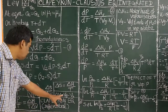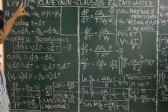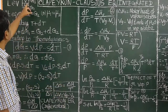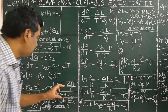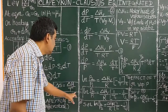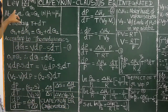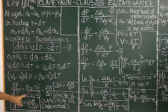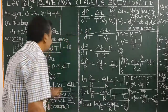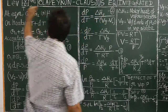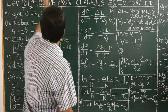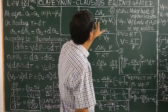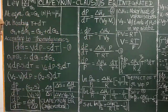Here, ΔV is the molar volume of water in the vapor state minus the molar volume of water in the liquid state. This equation rewritten as dP/dT = ΔHv / (T·(Vg − Vl)) is derived for vaporization of water. Therefore, dP/dT = ΔHv / (T·(Vg − Vl)). This equation is called the Clausius-Clapeyron equation.